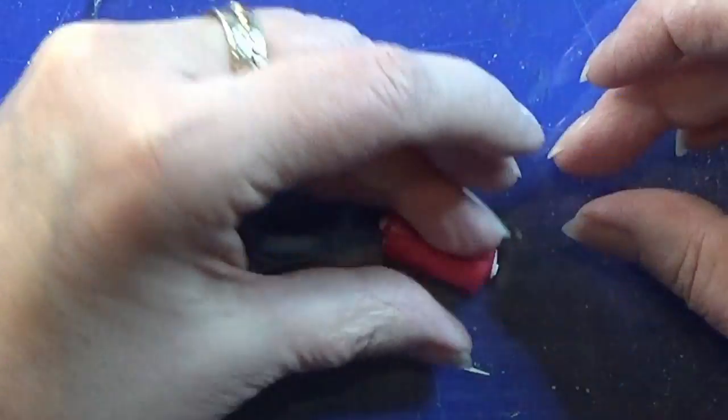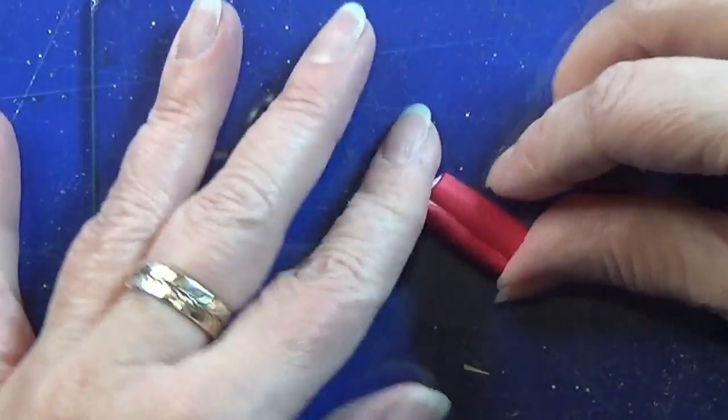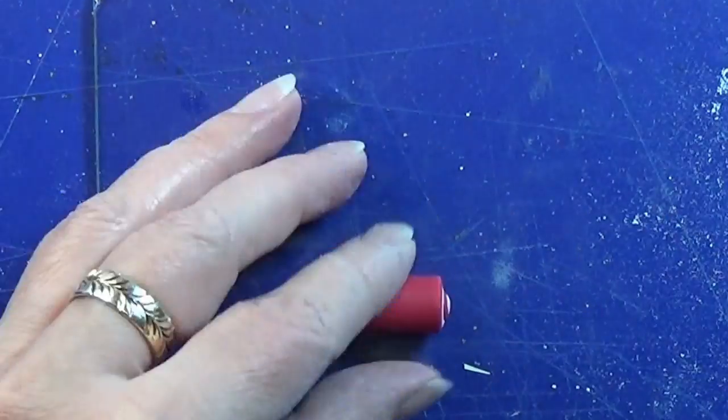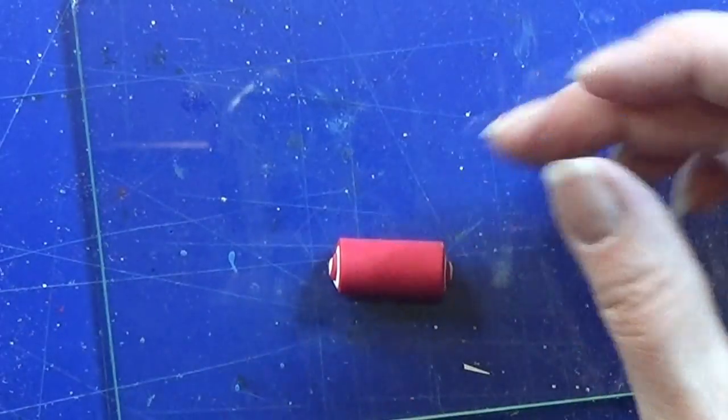When I get to the other end, I make sure I don't see any white on the outside of the cake. Just roll it a bit and cut off the ends of this little cake.